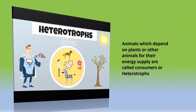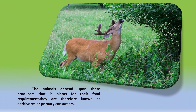Most animals depend on these producers, plants, or other animals for their energy. They are known as heterotrophs. The animals which depend on plants for their energy are known as herbivores or primary consumers, as they solely depend on plants for their food requirement and energy.